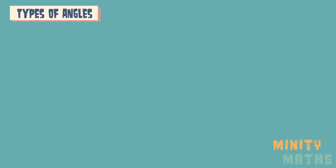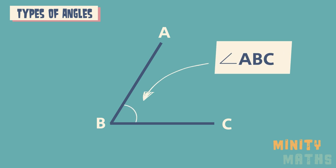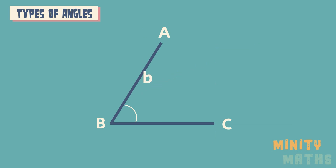Angles are often labelled in relation to the line segments that they are between. Points are labelled with letters. We can also use these symbols when referring to angles. However, for simplicity we often use single letters or symbols such as these to label an angle.